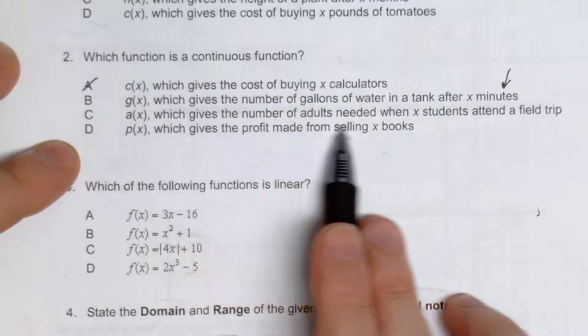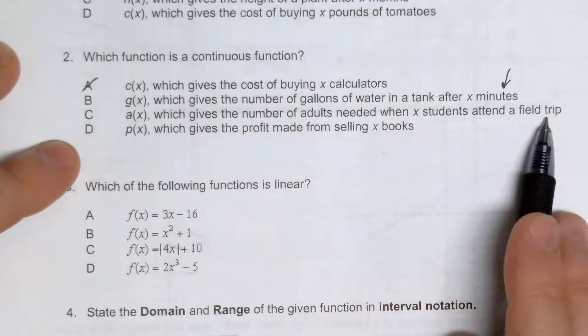A of X, which gives the number of adults needed when X students attend a field trip. This is definitely discrete because it's a distinct and separate value.